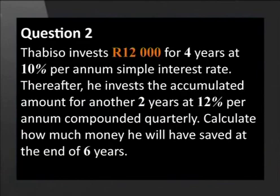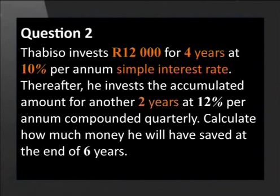Tabiso invests R12000 for four years at 10% per annum simple interest rate. Thereafter he invests the accumulated amount for another two years at 12% per annum compounded quarterly. Calculate how much money he will have accumulated at the end of six years.